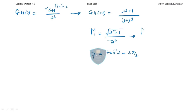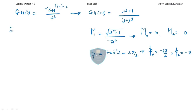Now find M(0): at omega equal to 0, the magnitude is infinity. M(∞) is 0. For φ(0): substituting omega=0 gives minus 3π/2. Finding the ending direction using φ(0) minus φ(∞): that is minus 3π/2 minus (minus π) = minus π/2, which is negative — meaning anticlockwise.